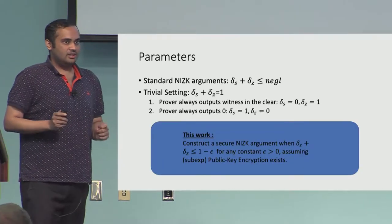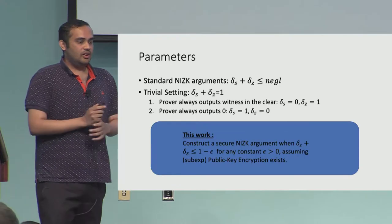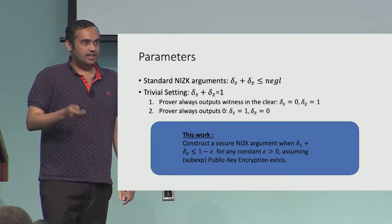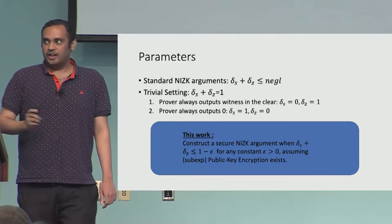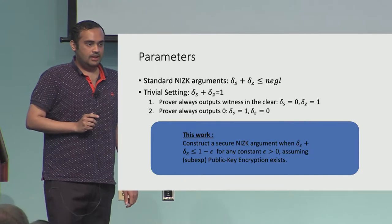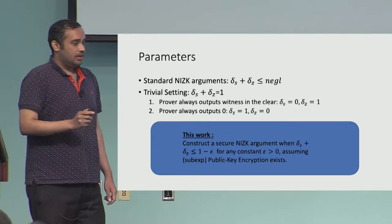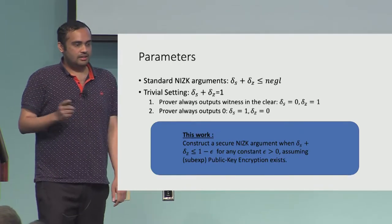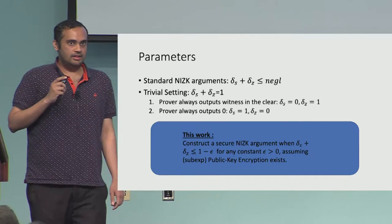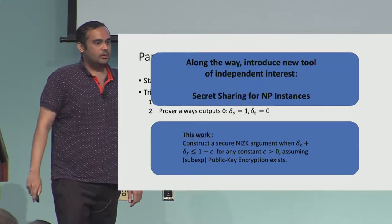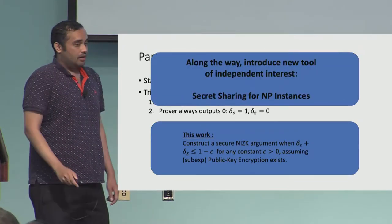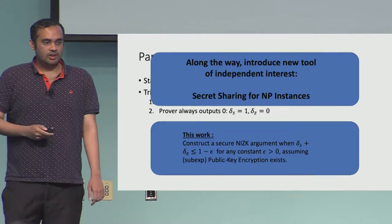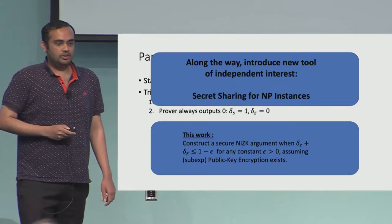What we do in this work is take a setting which is very slightly non-trivial: we have δS plus δZ a little bit less than one, say 1 minus ε for an arbitrarily small constant ε. If you're willing to assume public key encryption with sub-exponential security, we can show that such a NIZK is enough to imply a fully secure NIZK. Along the way, we also introduce a new object which we call secret sharing for NP instances.